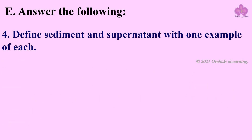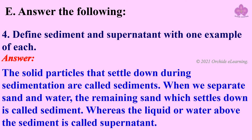Define sediment and supernatant with one example of each. The solid particles that settle down during sedimentation are called sediments. When we separate sand and water, the remaining sand which settles down is called sediment, whereas the liquid or water above the sediment is called supernatant.